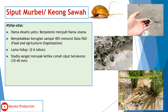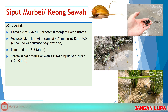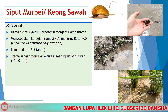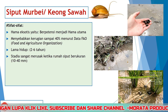Siput Murbei atau Keong Sawah memiliki sifat-sifat: pertama, merupakan hama eksotis yang berpotensi menjadi hama utama padi; kedua, menyebabkan kerugian sampai 40% menurut data FAO atau Food and Agriculture Organization; ketiga, lama hidup keong ini 2 sampai 6 tahun; dan keempat, stadia sangat merusak ketika rumah siput berukuran 10 sampai 40 mm. Gambar di sebelah paling kanan juga merupakan contoh hama Keong di sawah.